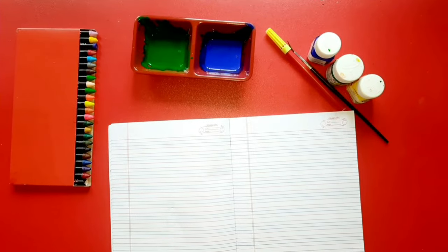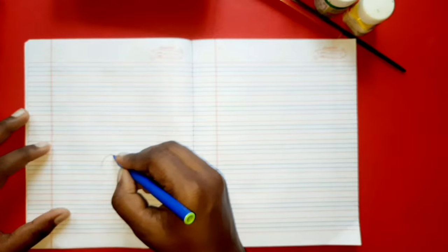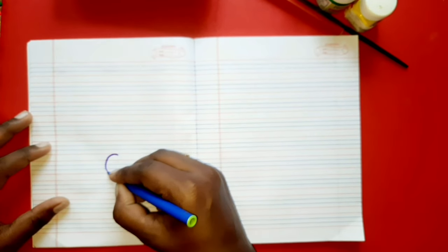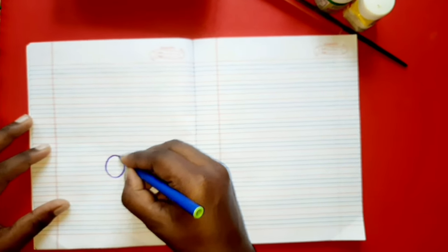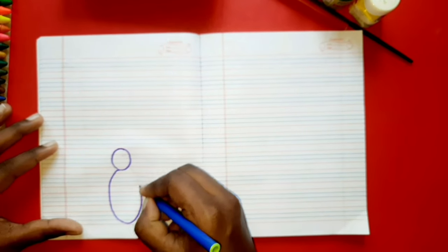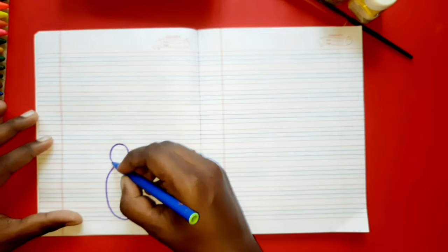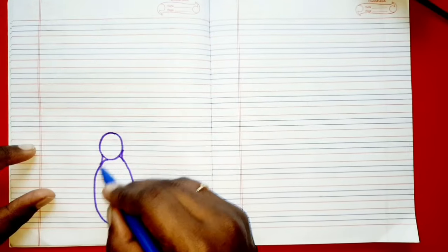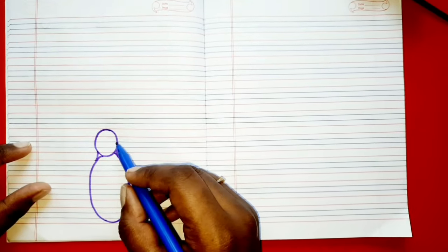So take your English notebook and first let's draw the head of the peacock. So start from here. First make a small circle and a big circle like this and join these two parts like this. Join these two circles by drawing a curve.